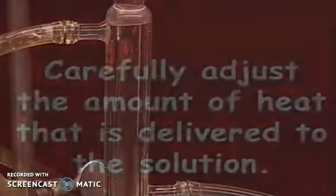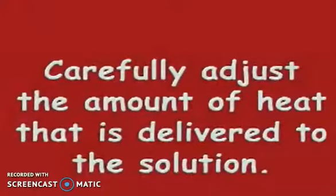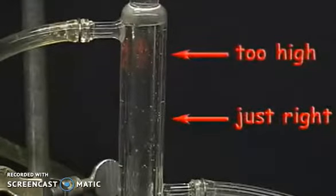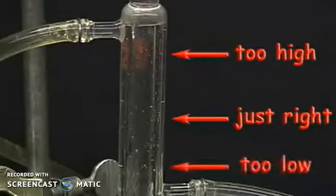Cool the condenser so the resulting liquid drops back into the flask. Carefully adjust the amount of heat delivered to the solution so the ring of condensation is about halfway up the condenser. You can see: too high, just right, too low.